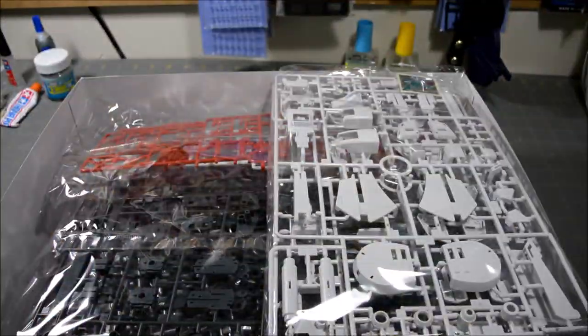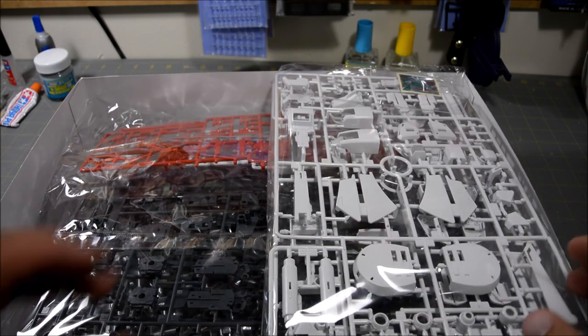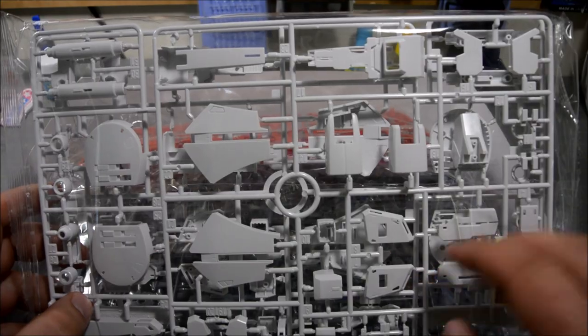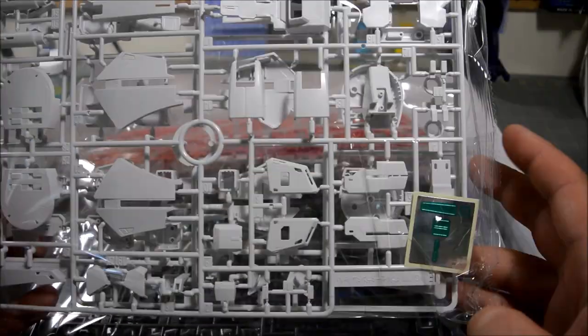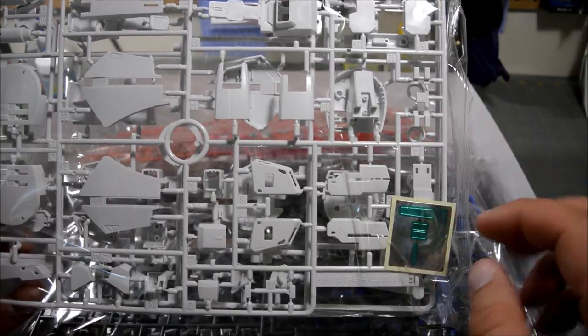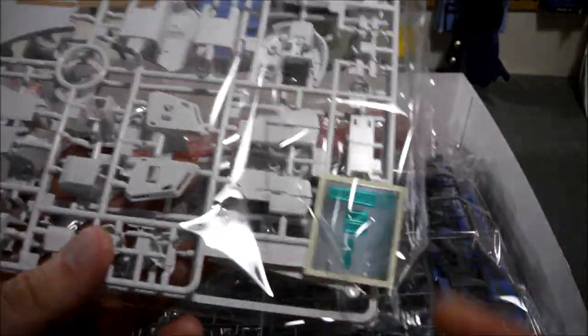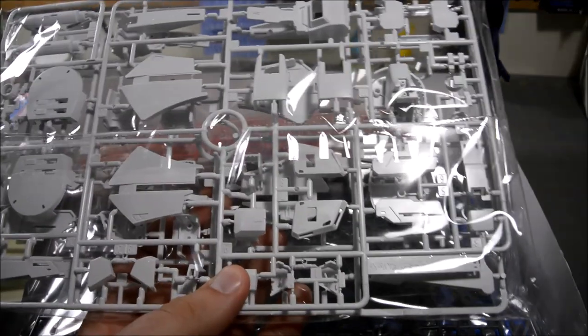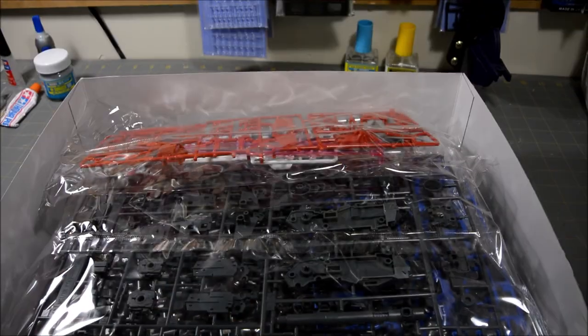So I think those two runners are identical. Get an E runner with white parts, looks like a lot of parts for the legs. There's the oversized beam sabers, shoulder armor, feet, forearms. A very small sheet of foil stickers, just the eyes and a few cameras, and then an identical runner on the other side of that baggie.